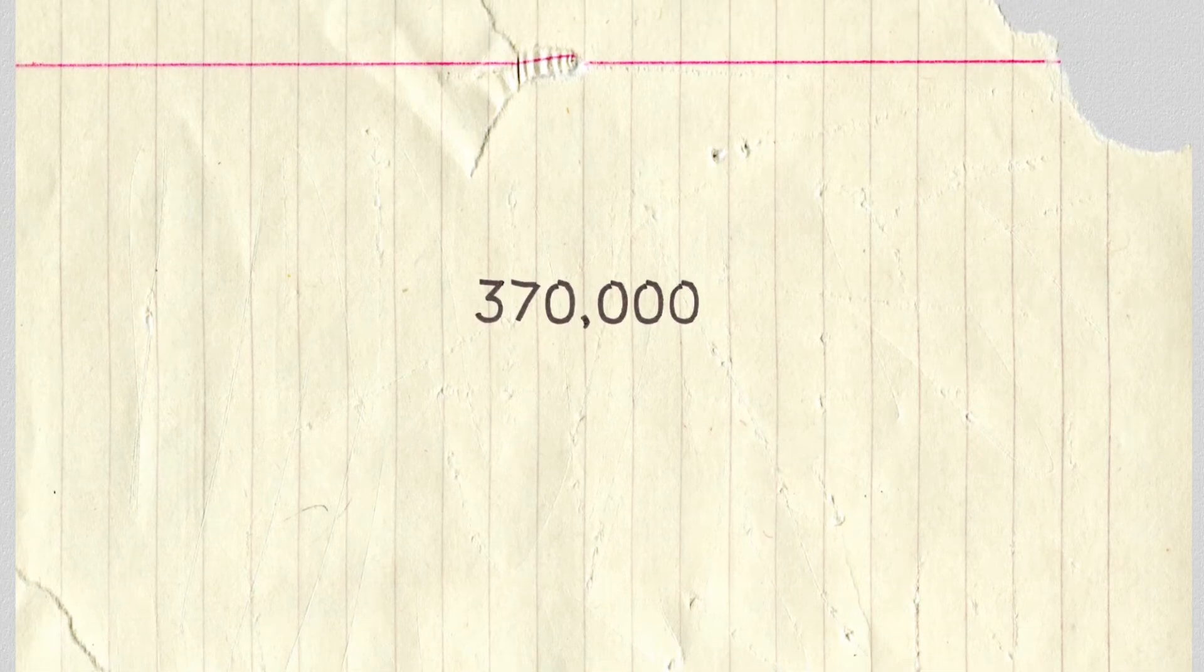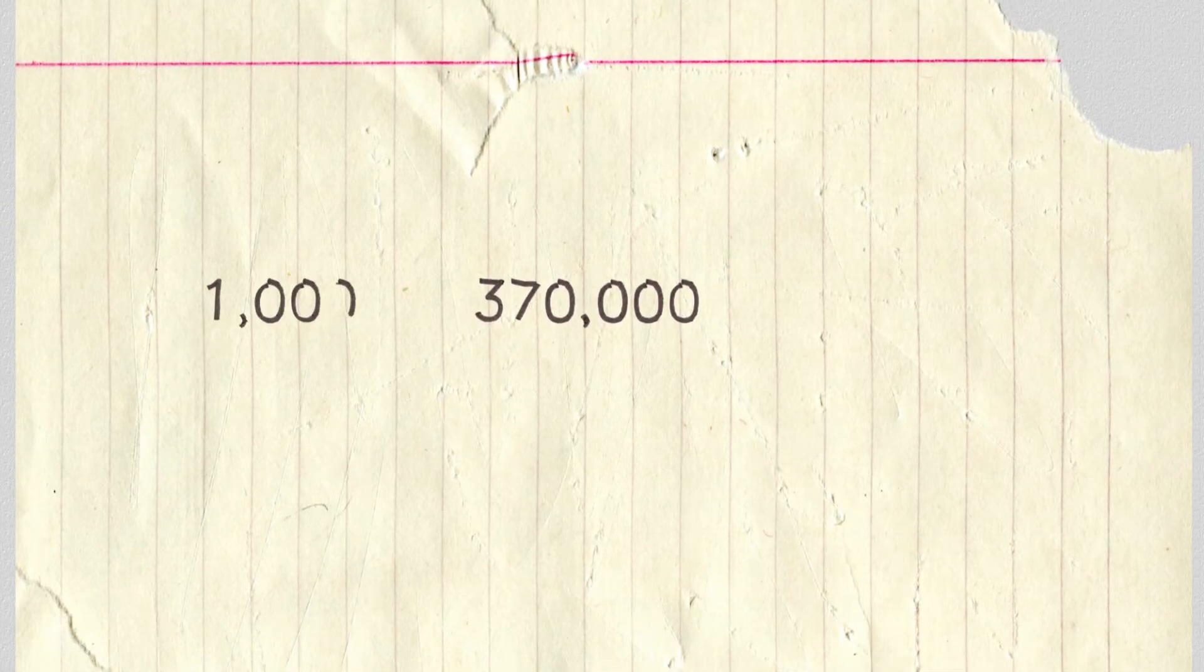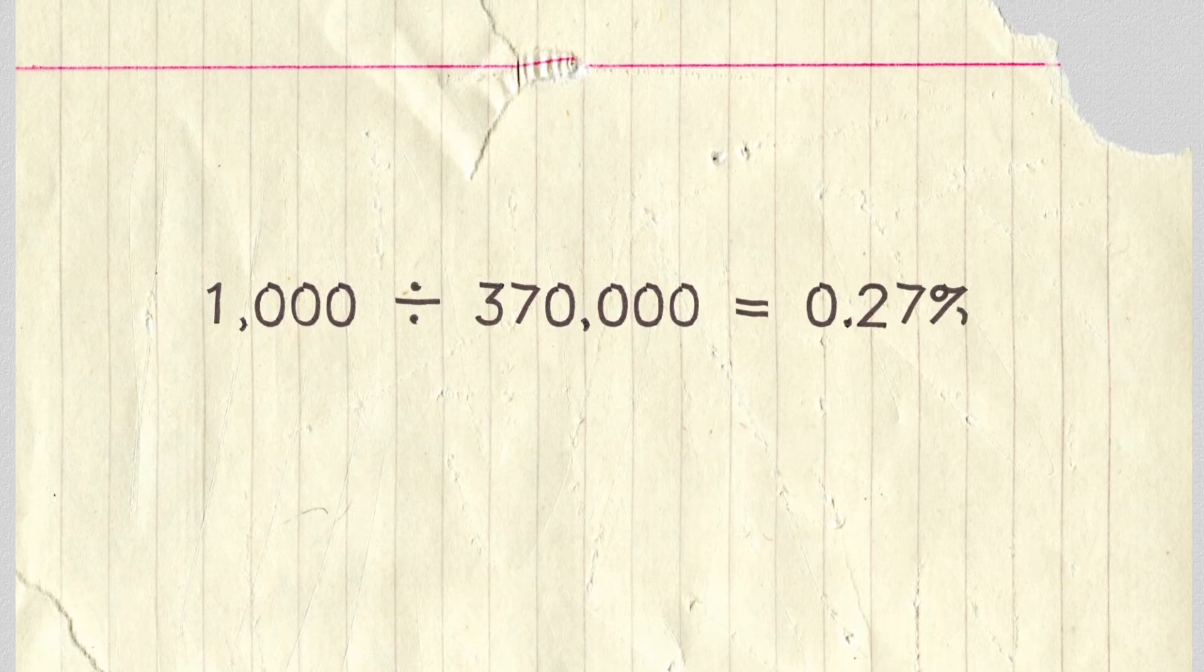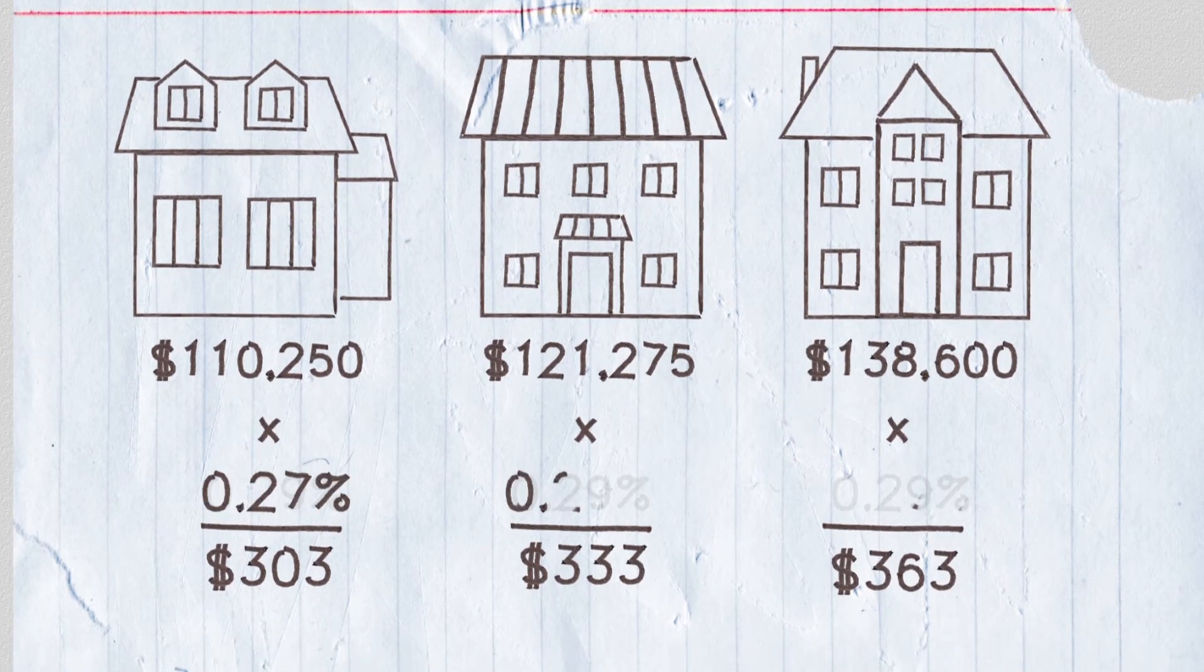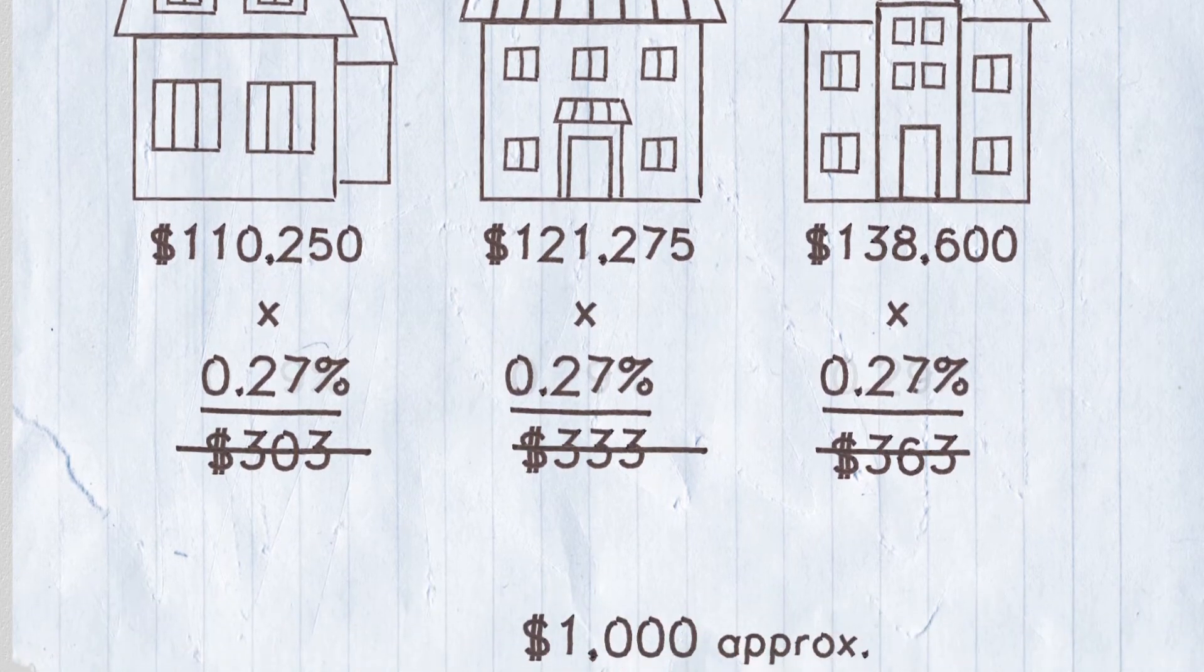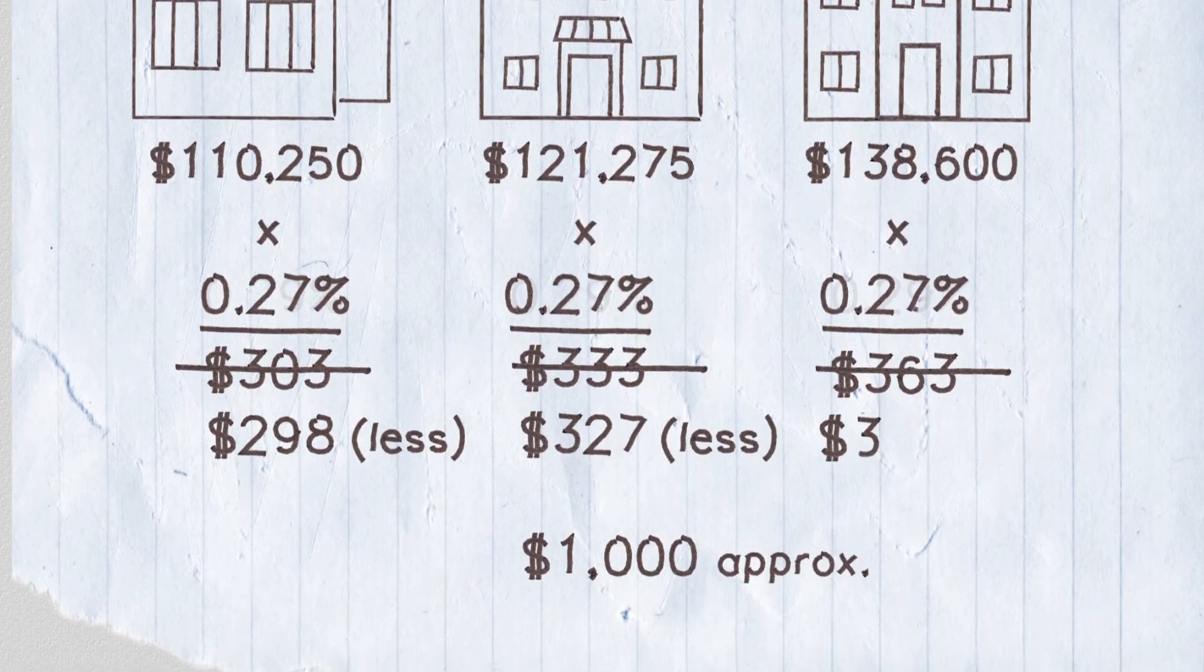The total value of all the homes have increased, which means the town has to calculate a new tax rate. With this new tax rate, the first two homes will actually pay less than the home on the right that was reassessed at a higher value.